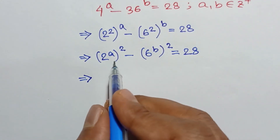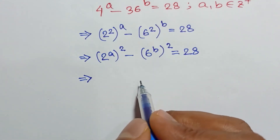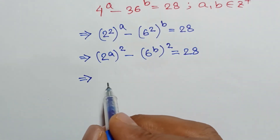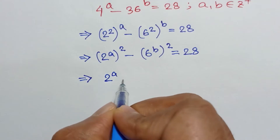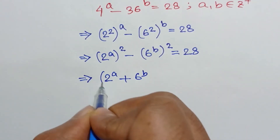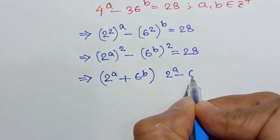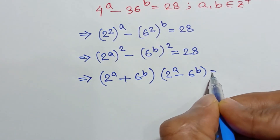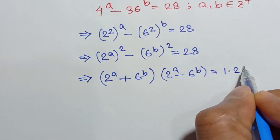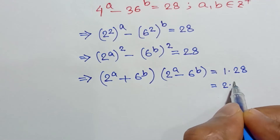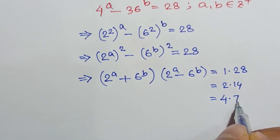This is in the form of the formula a squared minus b squared equals (a plus b)(a minus b). Applying this formula, we get (2^a + 6^b)(2^a - 6^b) = 28. Now 28 can be written as 1 times 28, or 2 times 14, or 4 times 7.